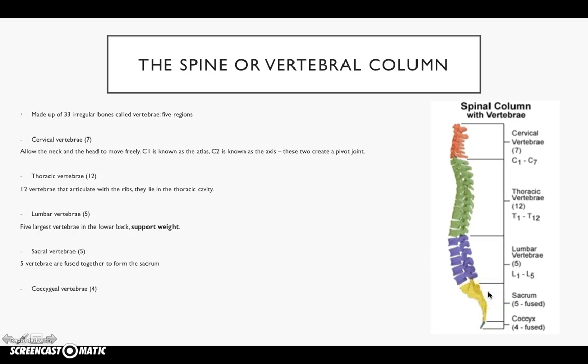And then finally, you've got the coccygeal vertebrae, and this is four bones. This is down here. Four bones fused together. These form the coccyx, otherwise known as the tailbone.